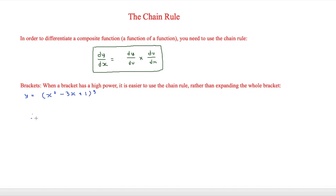We need to write this in terms of u. We say that the bracket is u, and therefore y equals u to the 5. We also need to say what u is equal to, so u equals x squared minus 3x plus 1. This means we can get dy over du, which is equal to 5u to the power of 4.